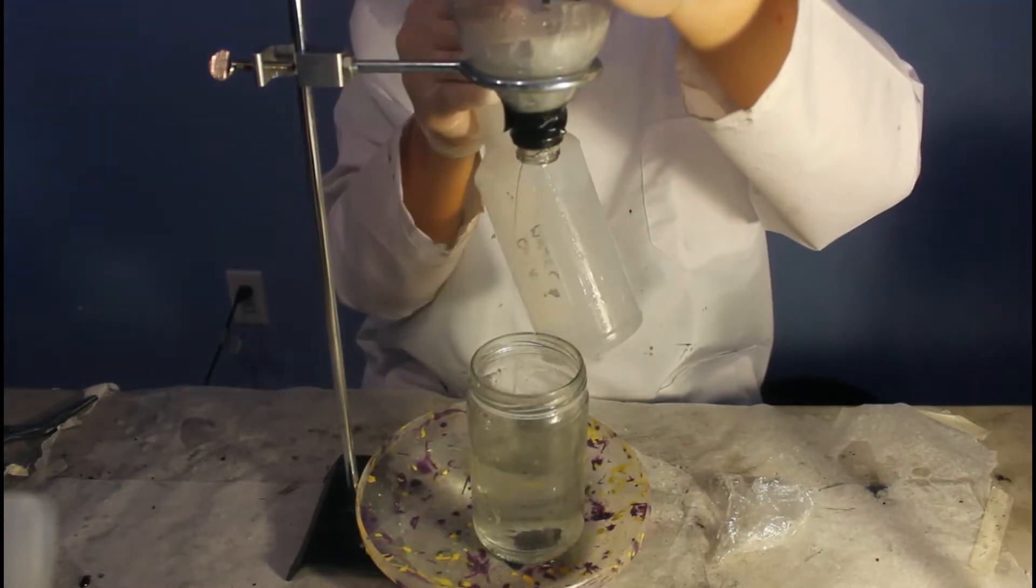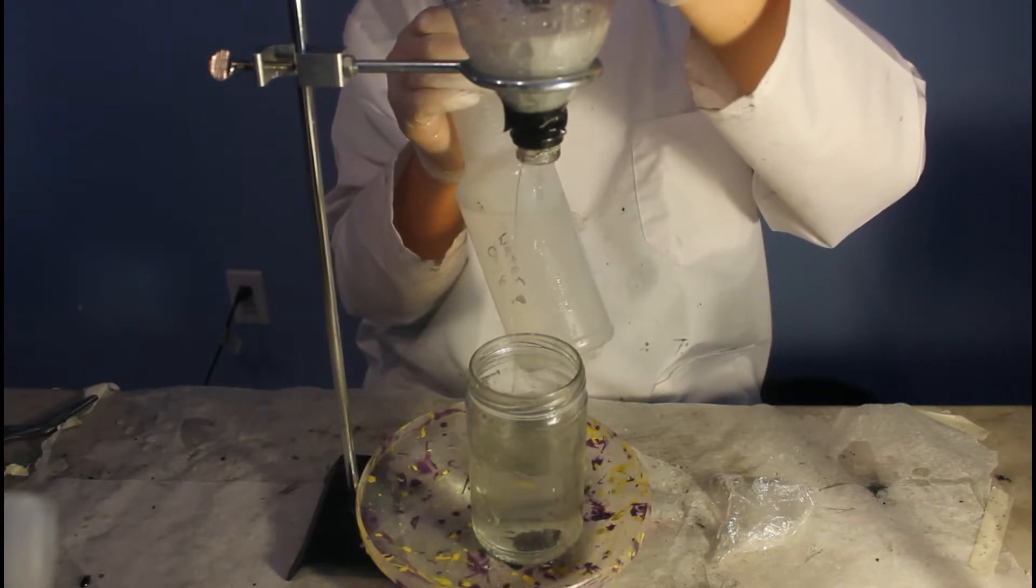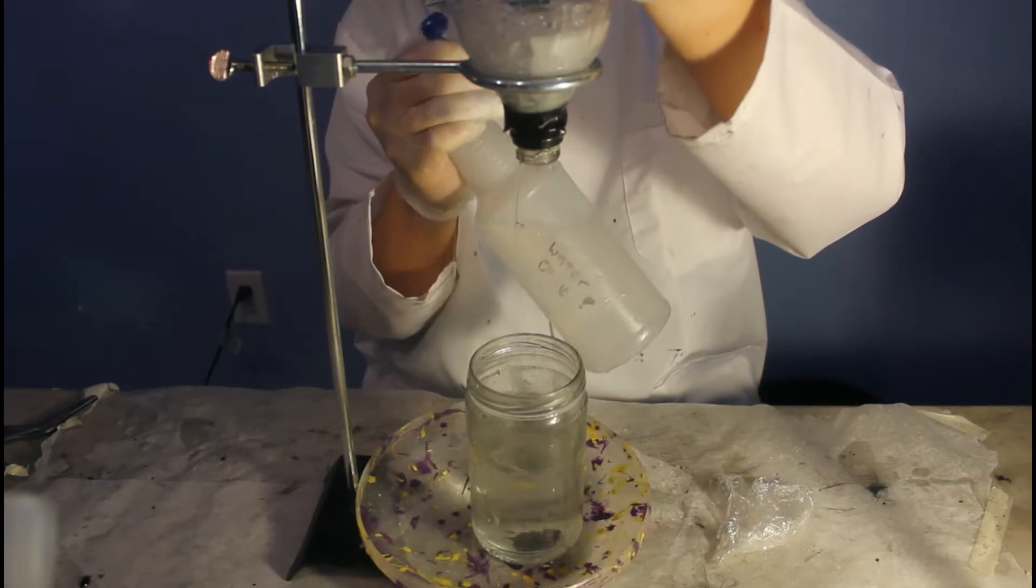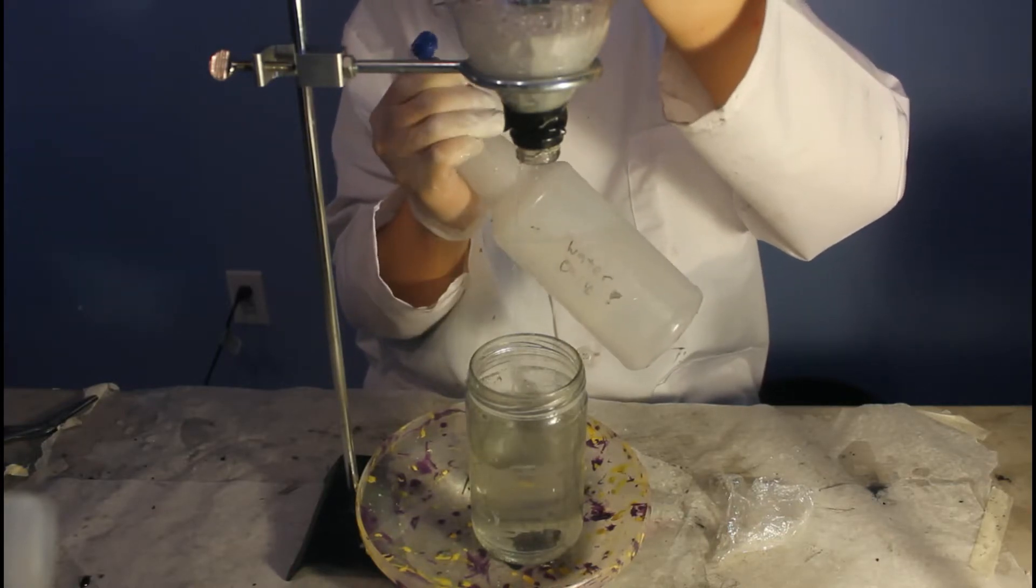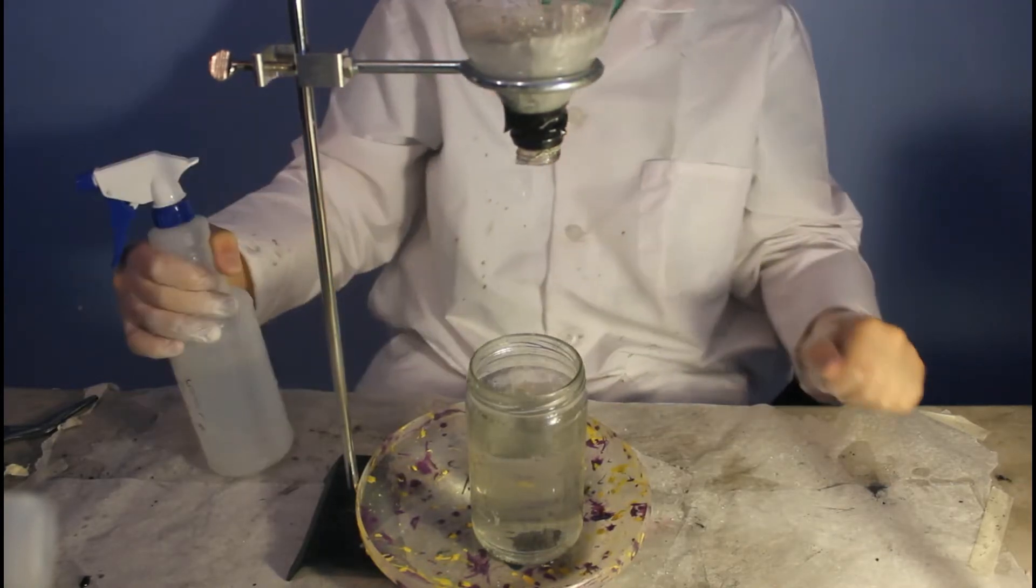A wash bottle is used to wash out any remaining zinc into the filter. The funnel is then topped off with deionized water and it is left to filter.